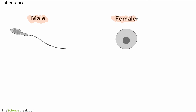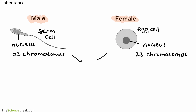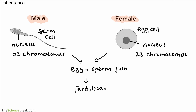Here we've got the idea of a male and female. The male will produce sperm cells and females will produce egg cells. If a sperm cell joins with an egg cell — here's the nucleus of each of those cells with the chromosomes — the 23 chromosomes in the sperm cell will combine with the 23 chromosomes found in the egg cell. The egg and sperm join together, and this process is called fertilization.